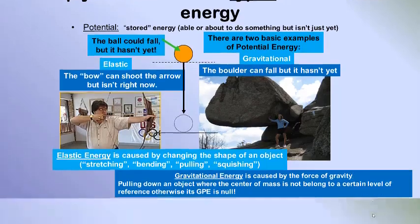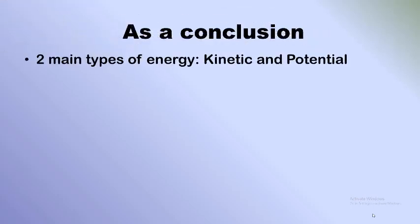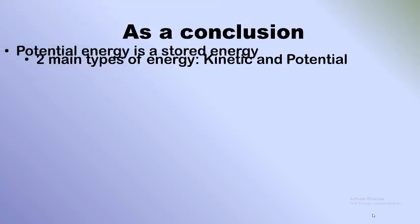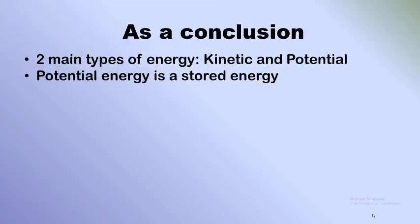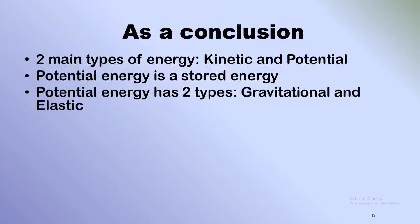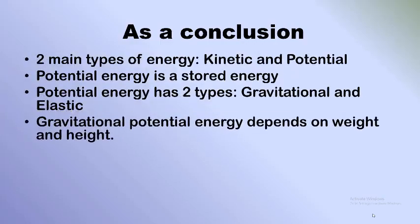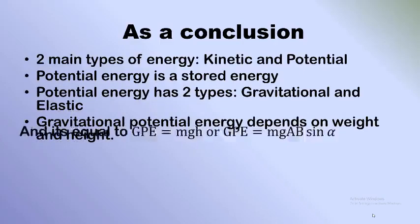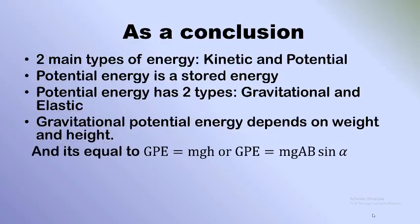In conclusion, we have two main types of energy: kinetic and potential. Potential energy is stored energy. It has two types: gravitational, which depends on position, and elastic, which is stored due to shape. Gravitational potential energy depends on height and equals GPE = mgh, or GPE = mg·AB·sin(alpha) for an inclined plane, or GPE = mgL·(1 − cos(theta)) for a pendulum.